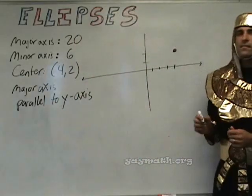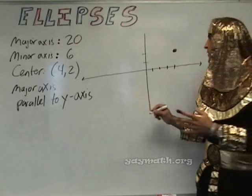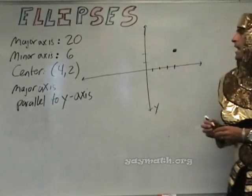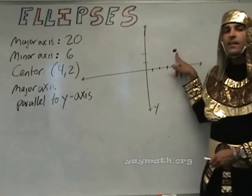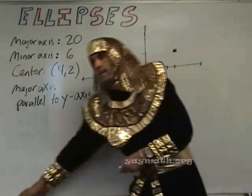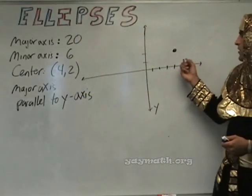So where's the y-axis? Vertical. The vertical one, right? So this is the y-axis, and the major axis is parallel to the y-axis. So how far up and down am I going? 10 up and 10 down. 10 up and 10 down, indeed. So here we go.